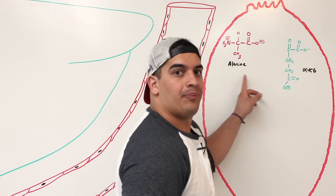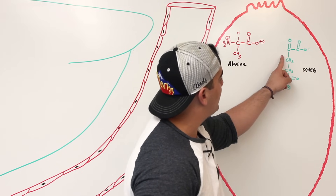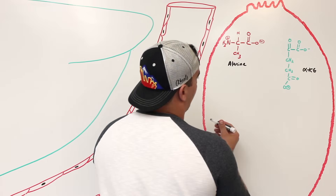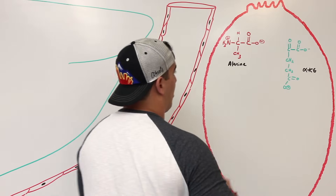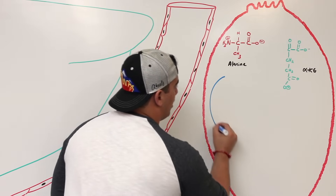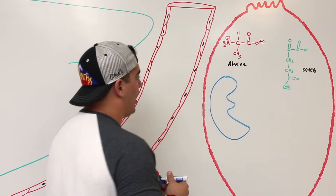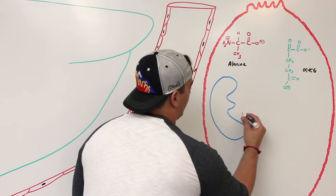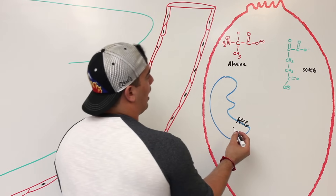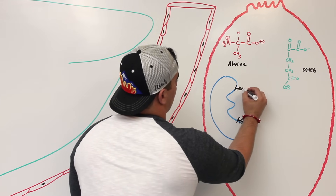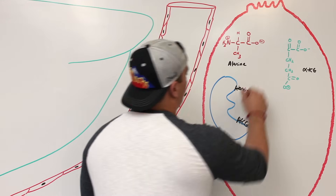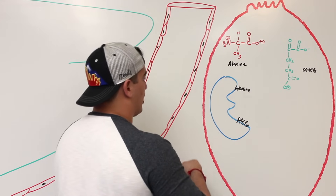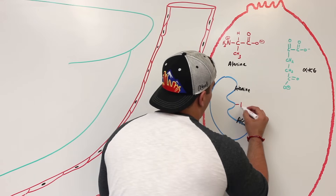A specific enzyme is going to take this alanine and this alpha-ketoglutarate and react both of them. The enzyme has two pockets — one pocket holds the alpha-ketoglutarate and the other holds alanine. Right in the middle of this enzyme there is a special molecule called pyridoxal phosphate, which is actually a derivative of vitamin B6.